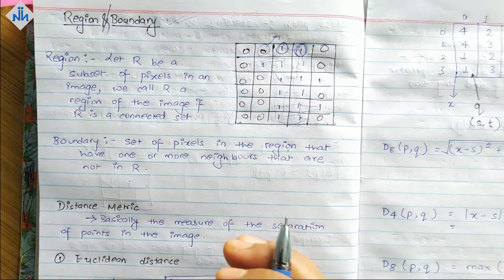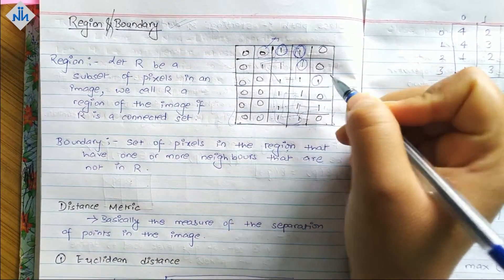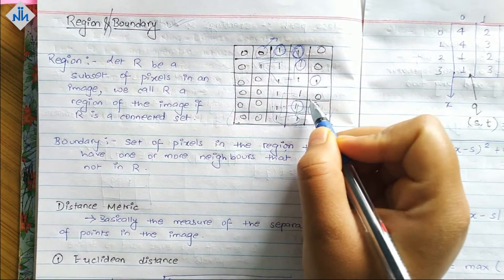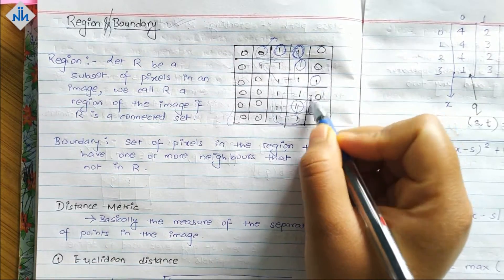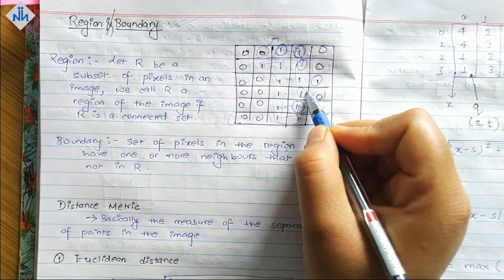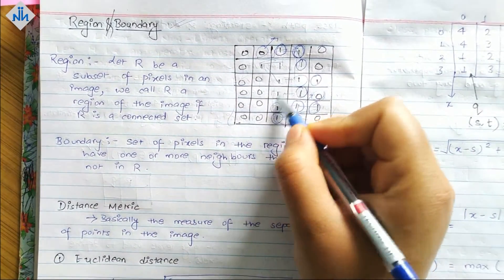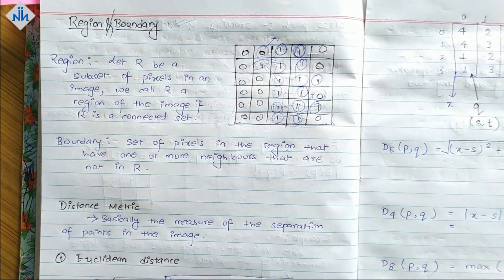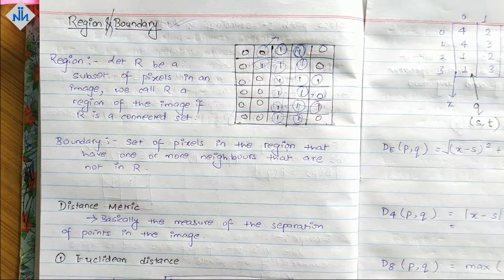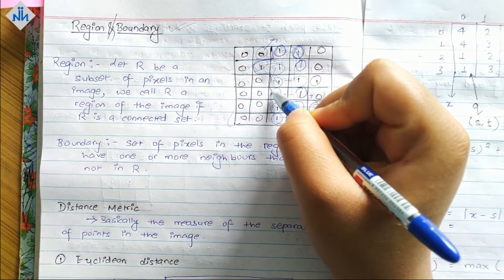Because this has a neighbor that is not in our region, this will also be a boundary. In this diagram we can see everyone is a boundary pixel, but in bigger examples and bigger images, the pixels that define the boundary of the region will be known as boundary pixels.